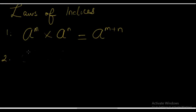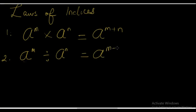Rule number 2: A raised to the power M, divided by A raised to the power N, is equal to A raised to the power M minus N. Notice what we did to the indices — when you are dividing, or when you are performing a division, you simply subtract the indices. Now let's go to rule number 3.